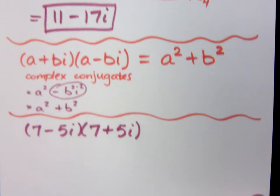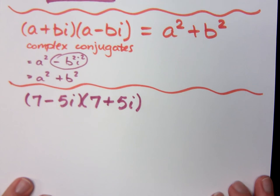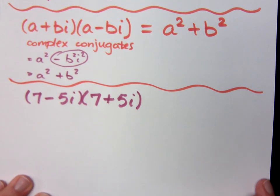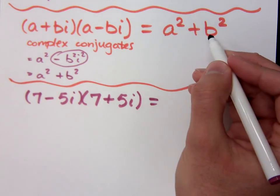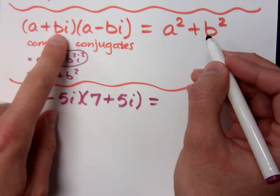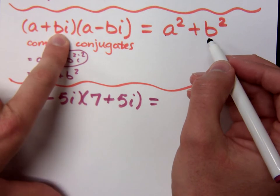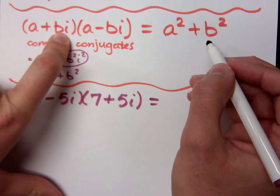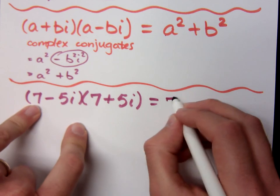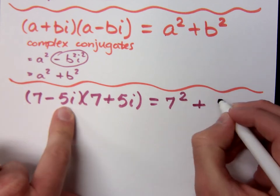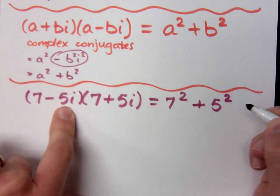If I take 7 minus 5i times 7 plus 5i, these guys are complex conjugates. According to this formula, if I take my a and b, now notice what a and b are. That's the real part and the imaginary part. Does it include the i? No. So that means when I work this, it should be 7 squared plus 5 squared.